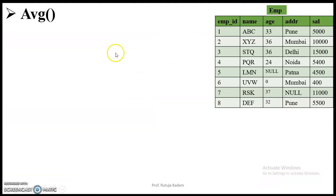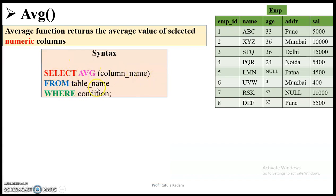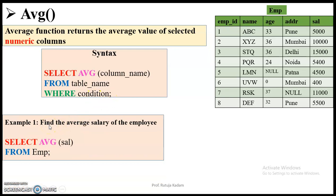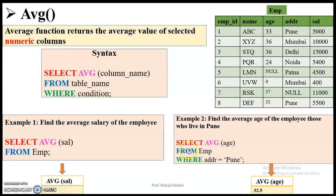Then comes the average function. This function will return the average value of the selected numeric columns — it also works on numeric columns only. The syntax is: SELECT AVG(column_name) FROM table_name WHERE condition. The first example is to find the average salary of the employee — all salaries will be added and divided by the total number of records, which is eight. The second example is to find the average age of employees who live in Pune. We have ages 33 and 32, which gives us 32.5. For every function, we are getting only a single value.